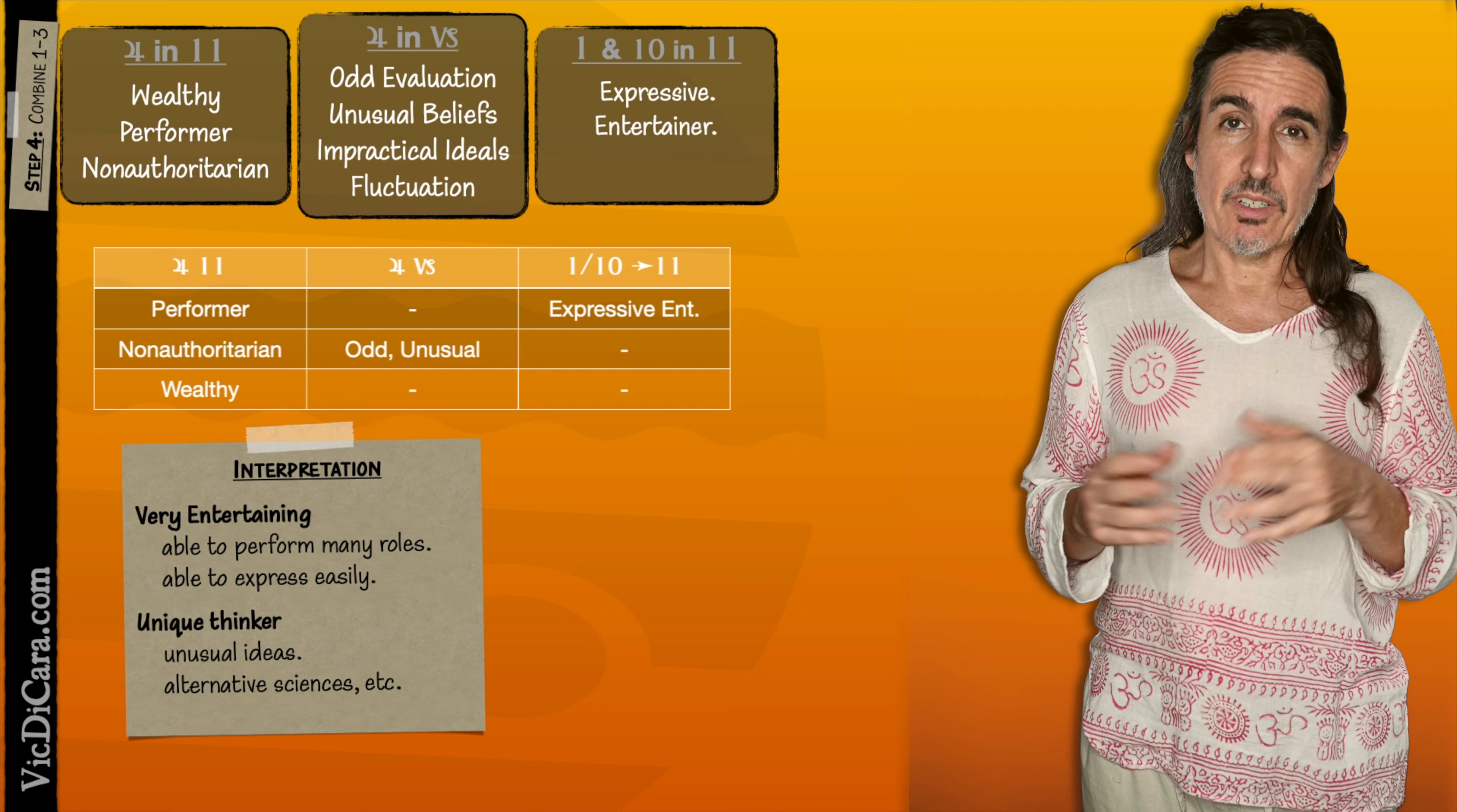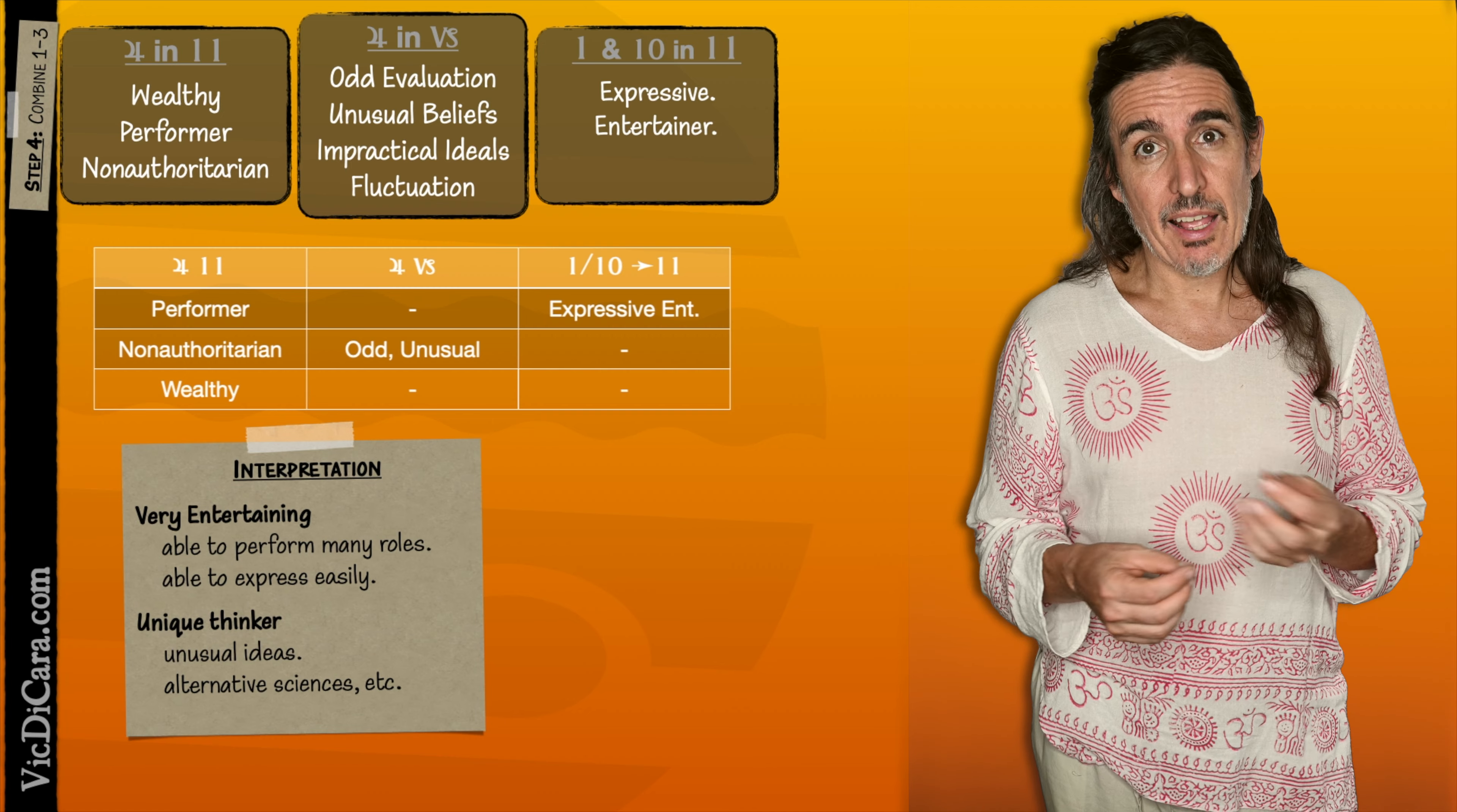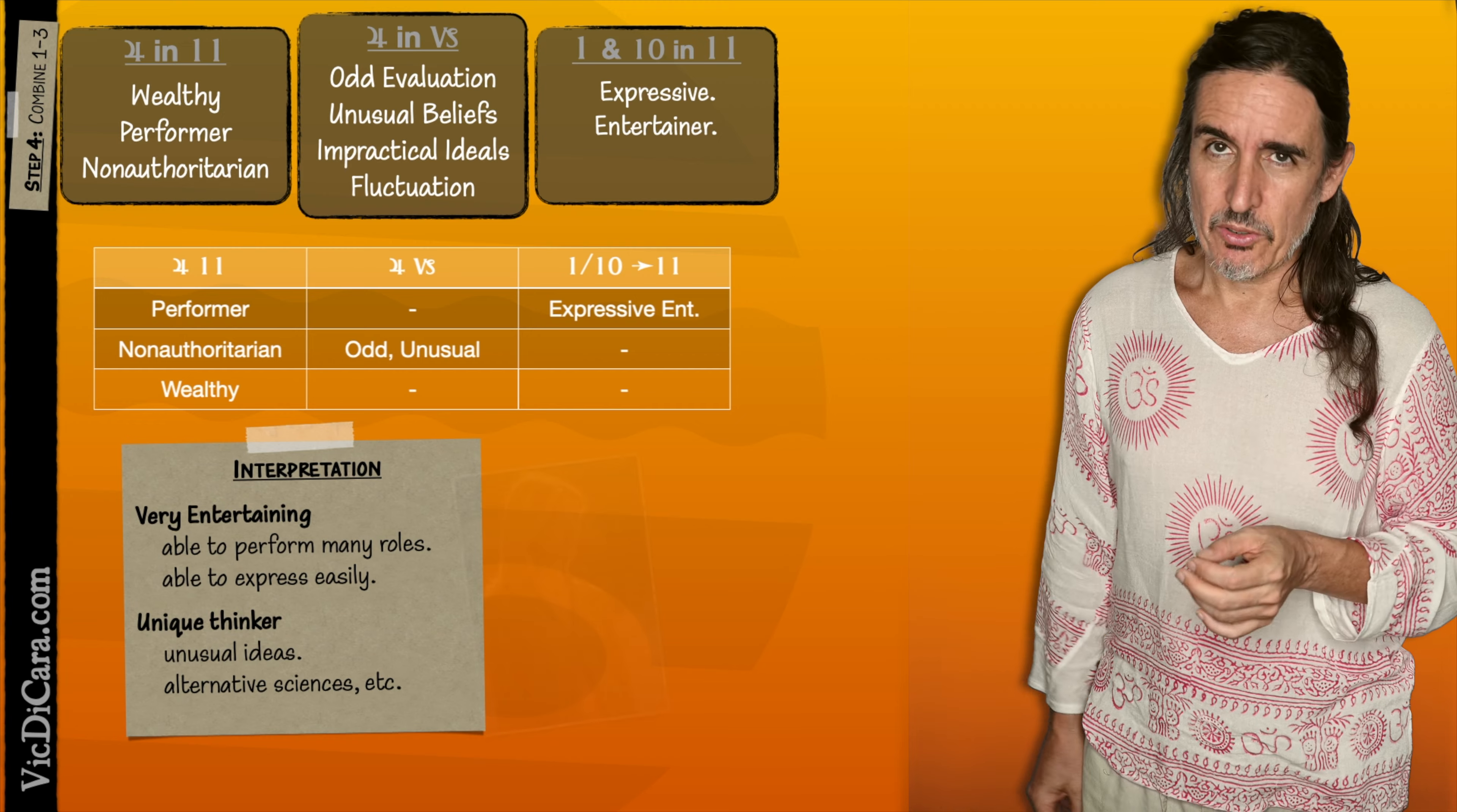So now we understand the theory of Jupiter in Capricorn in the 11th. The really important next step is to look at how the theory actually works in practice by looking at real charts that have Jupiter in the 11th, and not just one or two, but many. But for this video, let's at least just look at one. We'll look at Gwyneth Paltrow.